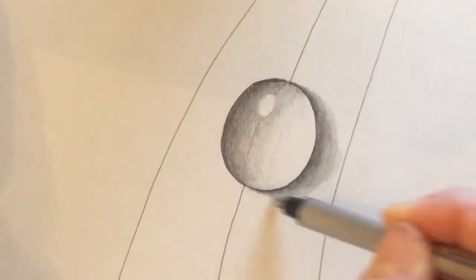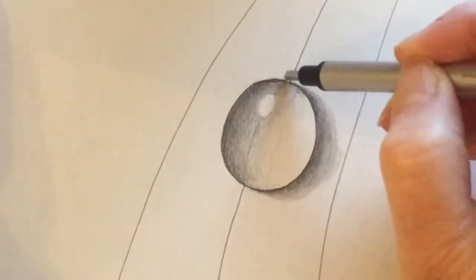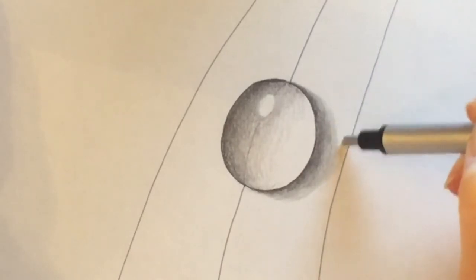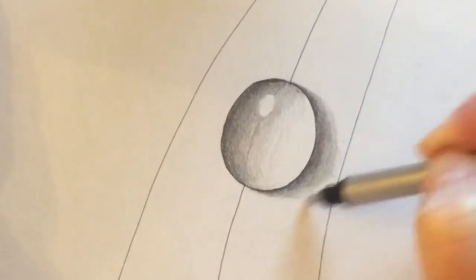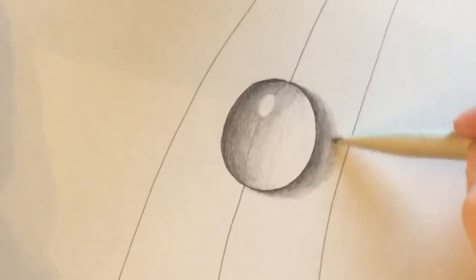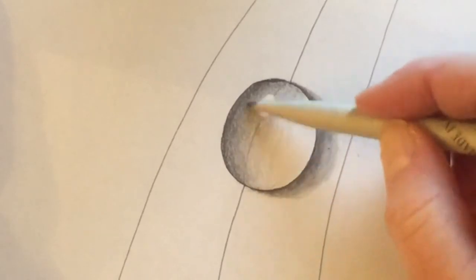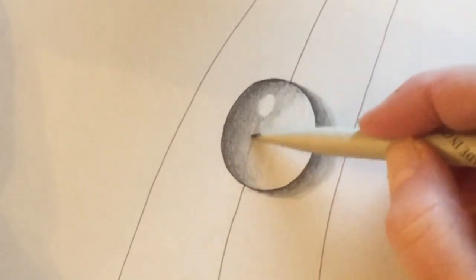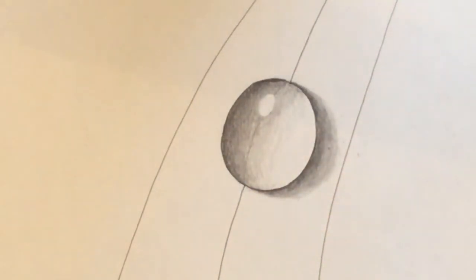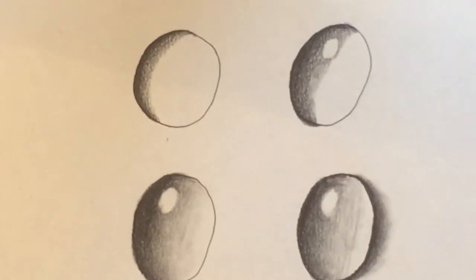I'm going to take this eraser and I'm going to clean up the edges a little bit. So as you can see it's pretty simple to draw a realistic drop. Now I'll tell you the steps really quickly one more time before I move on to the next.